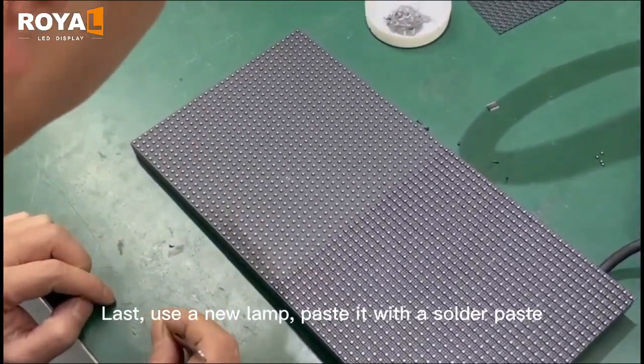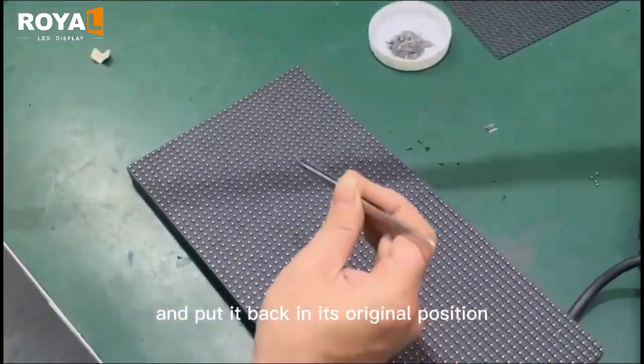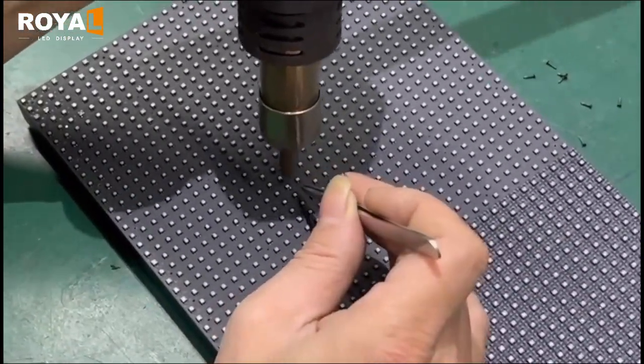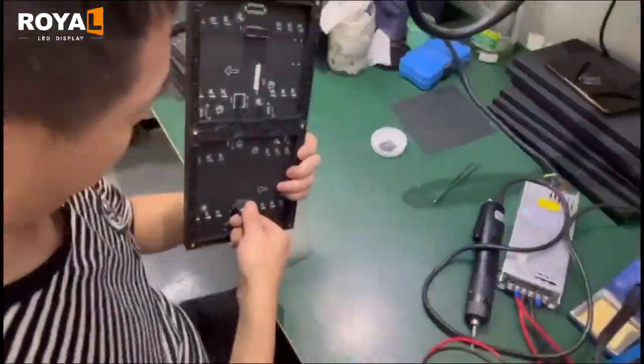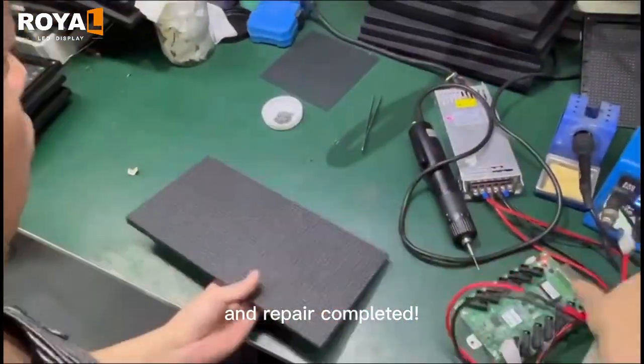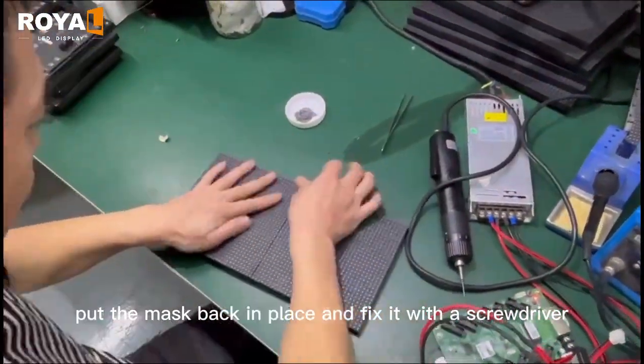Last, use a new lamp, paste it with solder paste, and put it back in its original position. Repair completed. Put the mask back in place and fix it with a screwdriver.